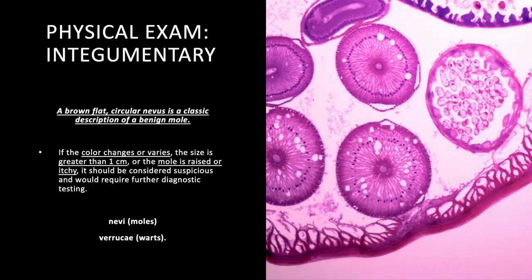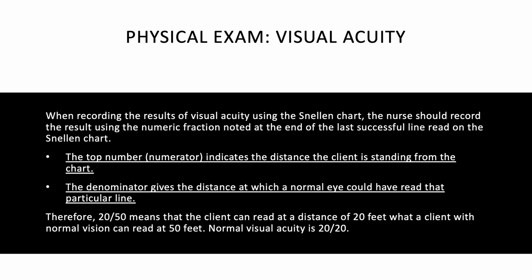Returning to integumentary: a brown, flat, circular nevus (mole) is a classic description of a benign mole. If the color changes or varies, it's bigger than a centimeter, raised, or itchy, that's suspicious and action is needed. Know the definitions: a nevus is a mole, and a verruca is a wart.